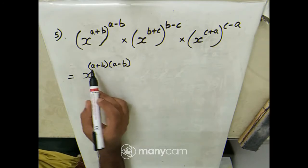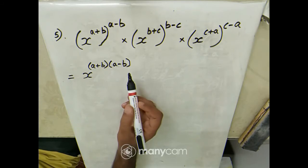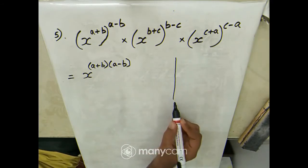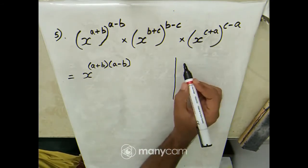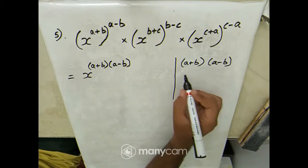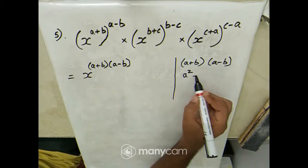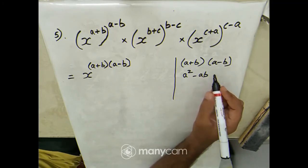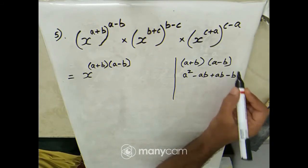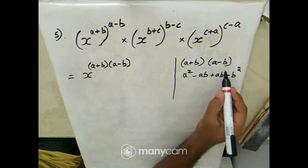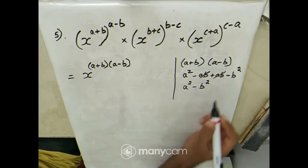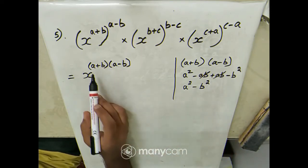Now, (a+b)(a-b) equals a²-b². We have this identity: a plus b into a minus b equals a square minus b square. In case you don't remember, you can multiply it out: a×a = a², a×(-b) = -ab, b×a = +ab, b×(-b) = -b². The -ab and +ab cancel, leaving a²-b².